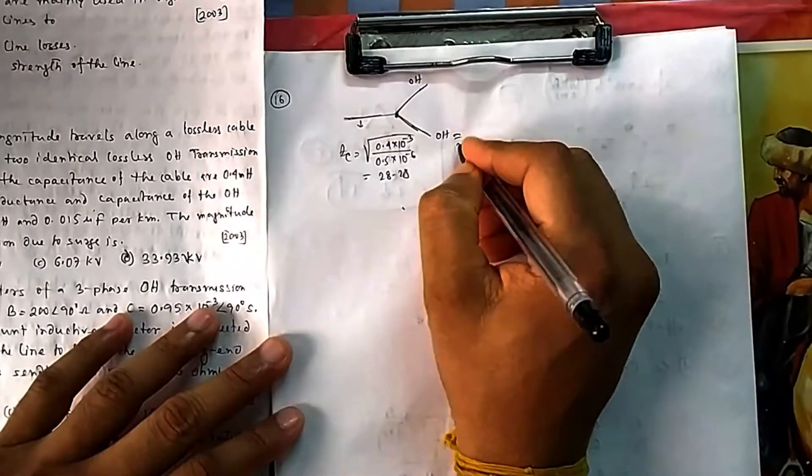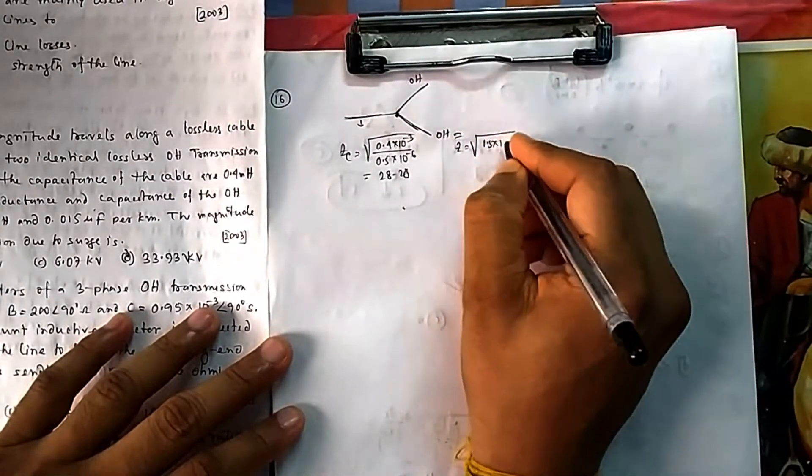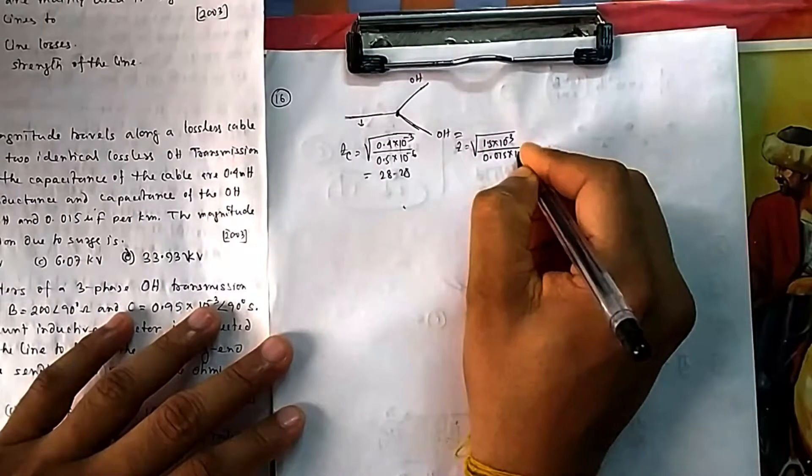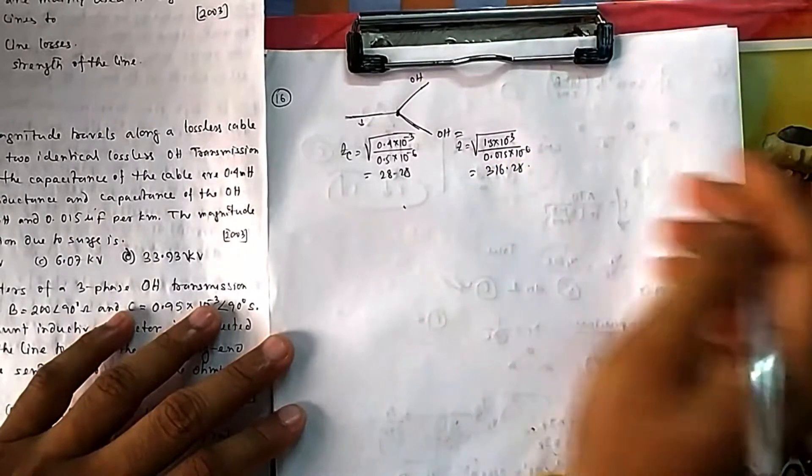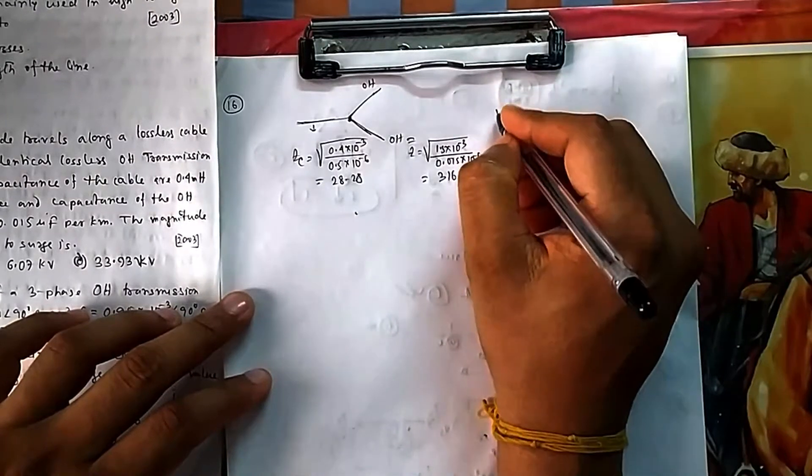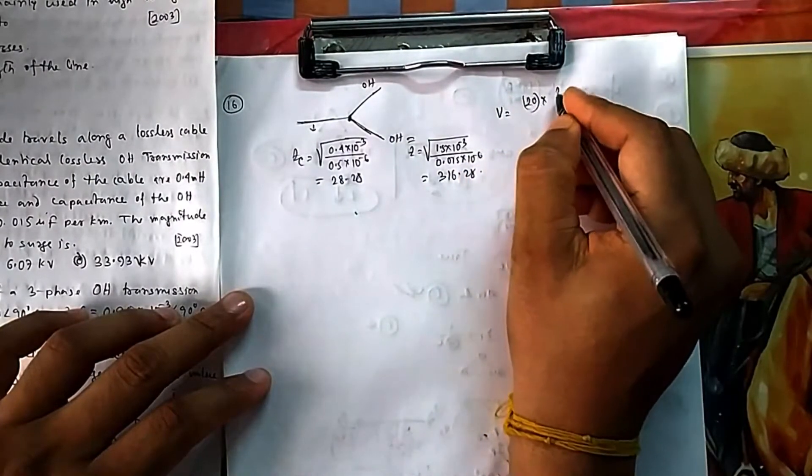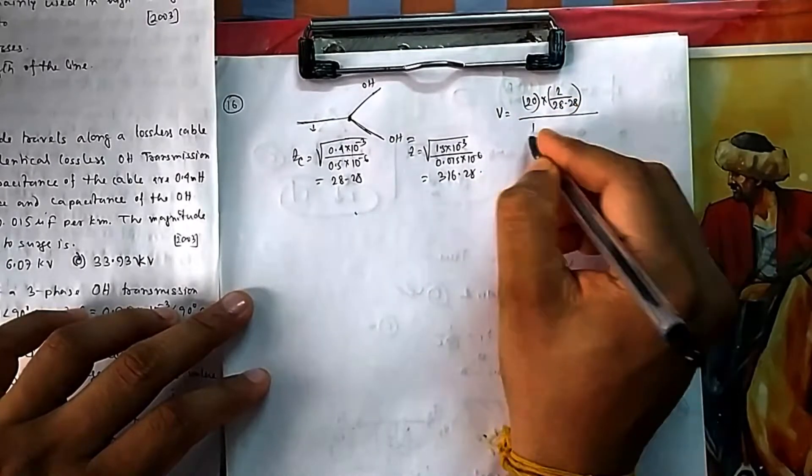For both overhead lines which are the same, Z = sqrt(1.5 × 10^-3 / 0.015 × 10^-6) = 316.28 ohms. Now once you have this, the transmitted wave formula is V = original voltage multiplied by 2Zc divided by (1/Zc + ...).